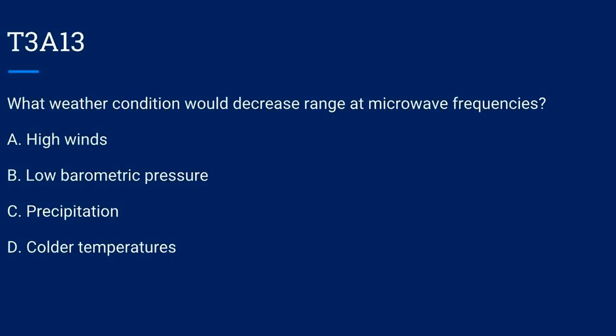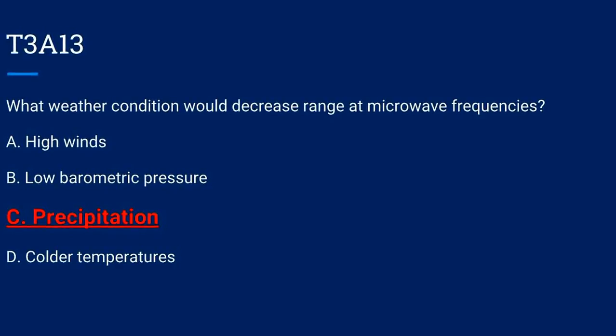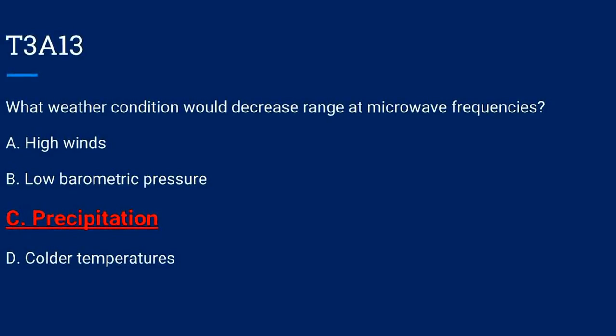T3A13. What weather condition would decrease range at microwave frequencies? A. High winds. B. Low barometric pressure. C. Precipitation. Or D. Colder temperatures. The correct answer is C: precipitation.